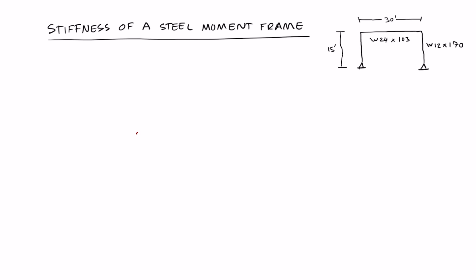Let's find the lateral stiffness of this steel moment frame. The steel moment frame has two columns and a beam. The columns have a size of W12 by 170 and the beam across has a size of W24 by 103. So the first thing we do to find the stiffness is we need to find the right equation to use.